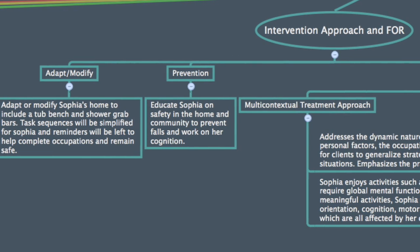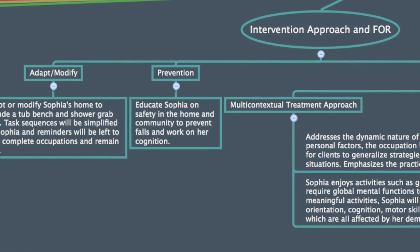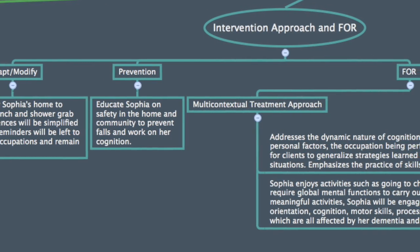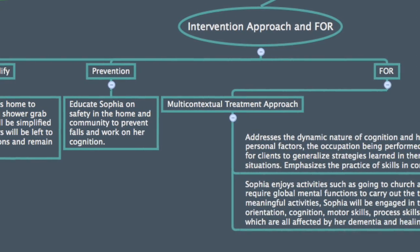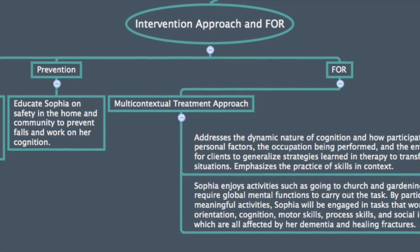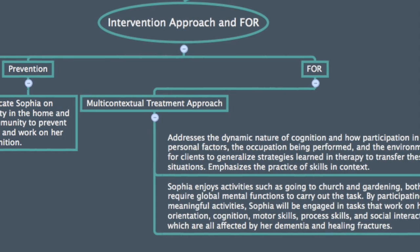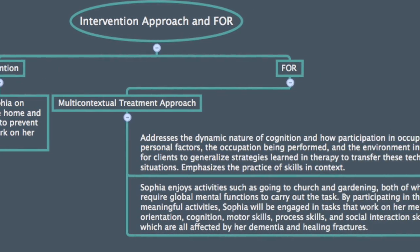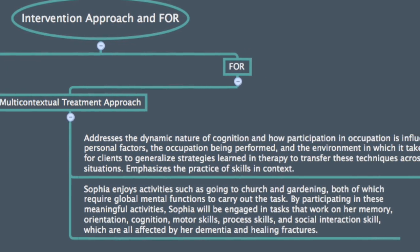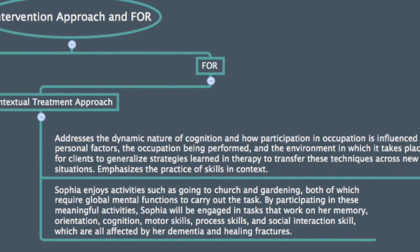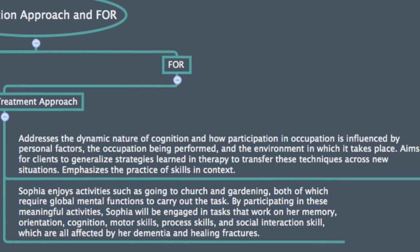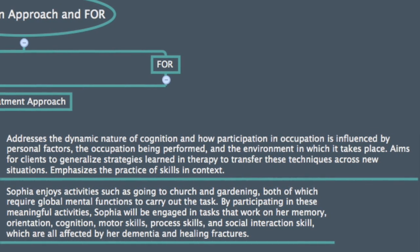Using the multi-contextual frame of reference, intervention approaches to Sophia's care include adapt, modify, and prevention. The multi-contextual frame of reference addresses the dynamic nature of cognition and how participation in occupation is influenced by personal factors, the occupation being performed, and the environment in which it takes place. It aims for clients to generalize strategies learned in therapy and to transfer these techniques across new situations, emphasizing the practice of skills in context. Sophia's home will be adapted to help her remain safe, task sequences will be simplified, and reminders will be left to help her complete tasks. She will be educated on safety in her home and community to prevent falls and to work on her cognition.